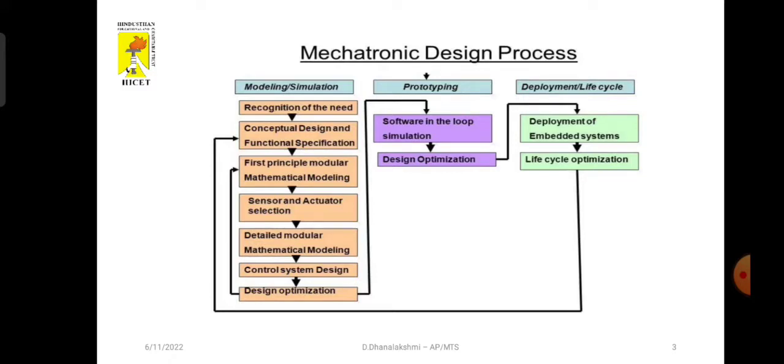And the next one is sensor and actuator selection. For every system, we have input and output. Examples for input devices are push buttons, switches, sensors, etc. And output devices are actuators. Examples for output devices are LED, LCD, lamp, circuit motor, generator, etc. We have to select the sensors and actuator for the particular model.